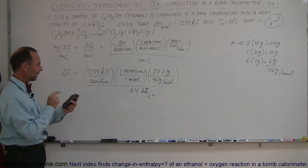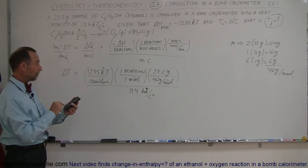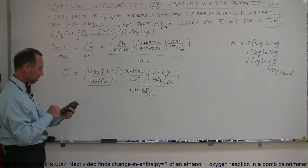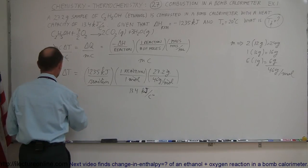1235 times 27.2 divided by 46, and then divide by 13.4. We're left with 54.5 degrees, so delta T equals 54.5 Celsius degrees.